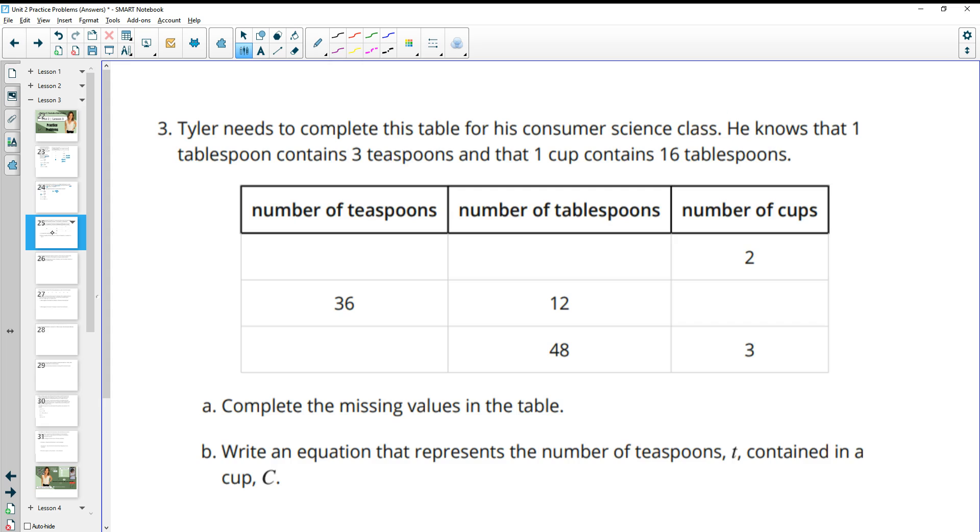Number three, Tyler needs to complete this table for his consumer science class. He knows that one tablespoon contains three teaspoons and that one cup contains 16 tablespoons. So we want to fill in this table first. We know that one cup equals 16 tablespoons. So if we had one cup here, we would have 16 tablespoons. This time we have two cups, so we're going to have two times 16 or 32 tablespoons. So when we start in this column to get here, we multiply by 16.